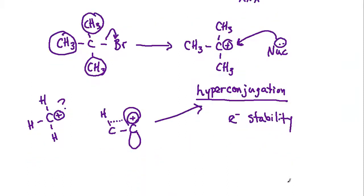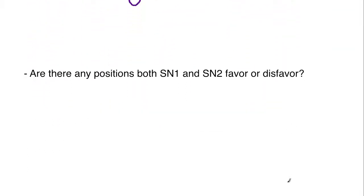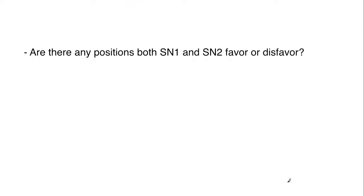This is the favored process: tertiary, secondary, primary, methyl, and it's because we're looking for electronic stability. Electronic stability is going to come from the hyperconjugation. So the next question: are there any positions that both SN1 and SN2 favor or disfavor? And the answer here is yes, particularly when you get into resonance or lack thereof. There are two types that are favored by both, and that is known as allylic and benzylic.